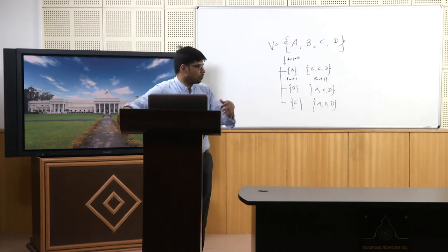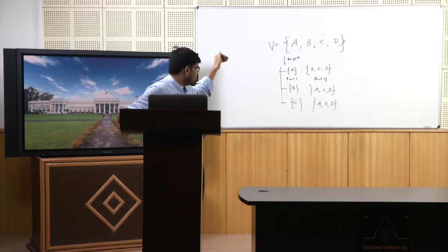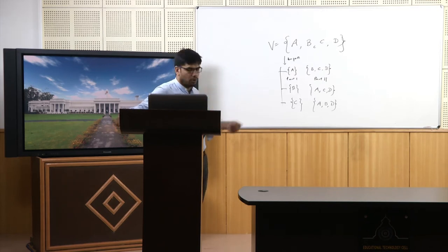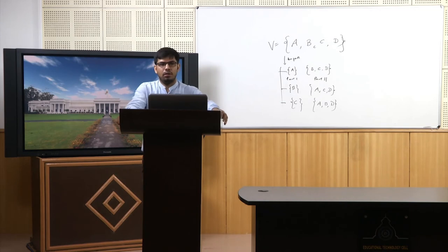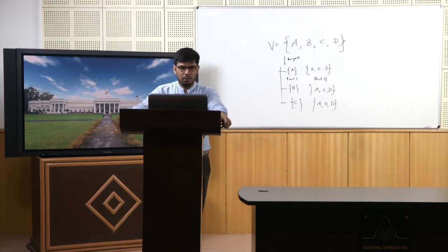So for a variable with four categories A, B, C, D, all possible two-subset combinations can be used as the possible set of candidate split values.